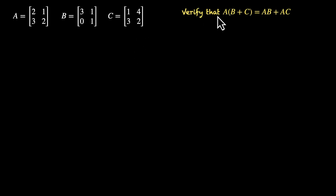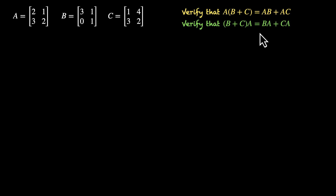Let's try one more problem. Here A is a 2 by 2 matrix: 2, 1, 3, 2. B is 3, 1, 0, 1, also 2 by 2. And C is 1, 4, 3, 2, also 2 by 2. Our job is to verify that A(B + C) = AB + AC, and also that (B + C)A = BA + CA. Remember that AB and BA are not the same, and A(B + C) is not the same as (B + C)A.